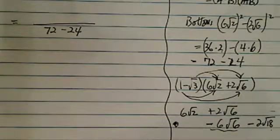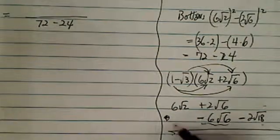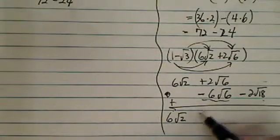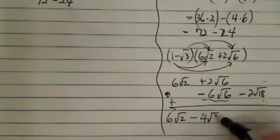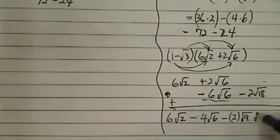18 has a 9 in there, so I need to simplify it a little bit. So far I have, let's add it together. I have a 6 radical 2, minus 4 radical 6, minus 2 times radical 9, radical 2.